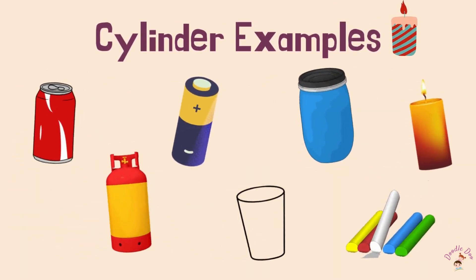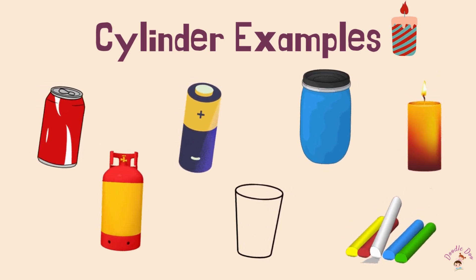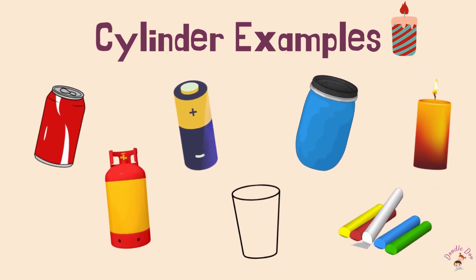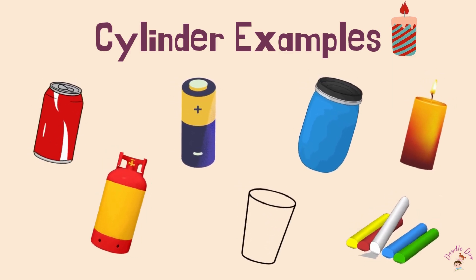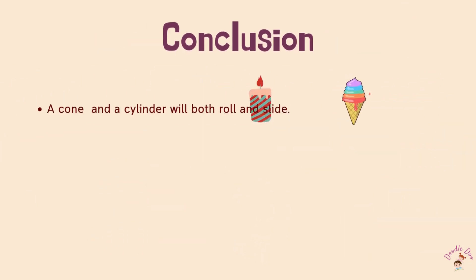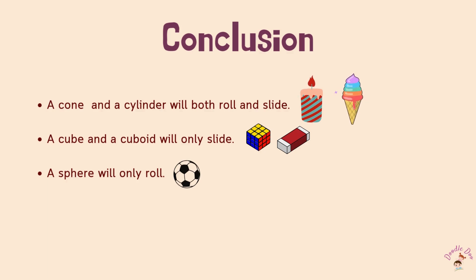Examples of cylinders: Tin, Battery, Candle, Water Drum, Glass, Chalk. Conclusion: A cone and a cylinder can both roll and slide. A cube and a cuboid will only slide. A sphere will only roll.